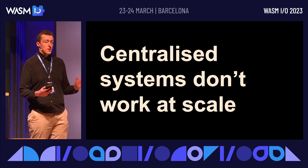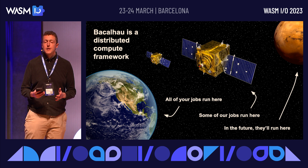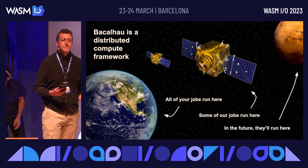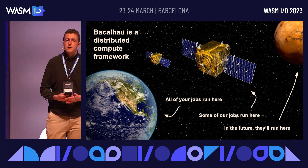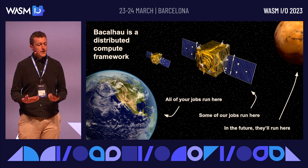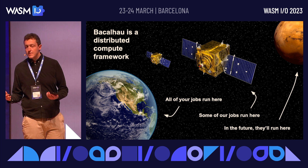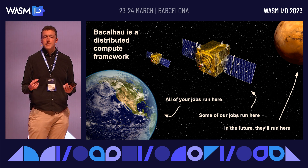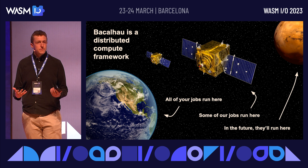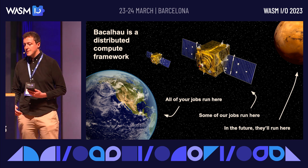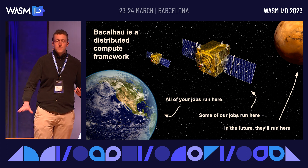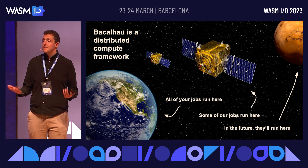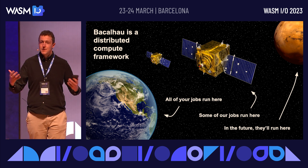When I say scale, I don't just mean volume — I also mean time and distance. For most people in the room, most of your jobs run on planet Earth. Bacalhau runs jobs on satellites as well, and Protocol Labs builds for the future — we will want to run jobs on Mars. Mars is three light minutes away from Earth, so that's quite a lot of latency. Bacalhau is designed to run on all sorts of different places: servers with four, six, eight GPUs, but also Raspberry Pis and satellites. And WebAssembly is the perfect target for that because you can write it once, run it anywhere.